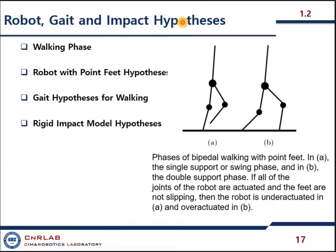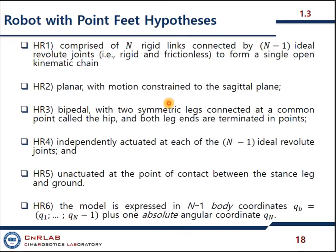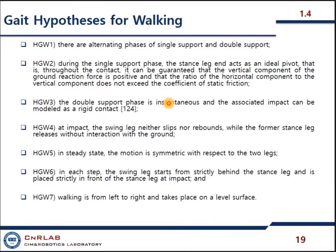Robot gait and impact hypotheses: there are many different hypotheses for walking, which are walking phase, robot with point feet hypothesis, gait hypothesis for walking, rigid impact model hypothesis. These are the things: stance phase and double support. These are the main things which I have already discussed in my previous discussion, so I would skip it. I just put it in for the record.